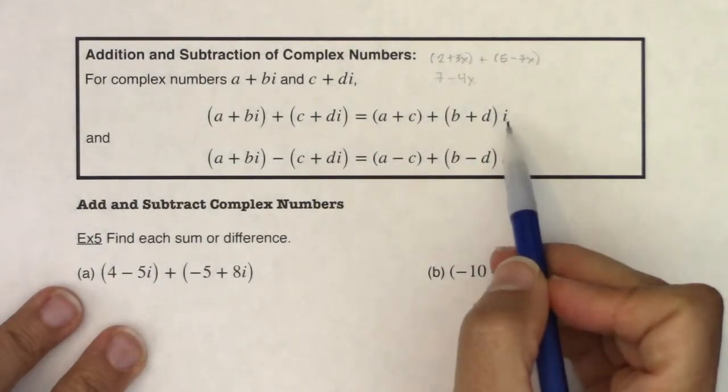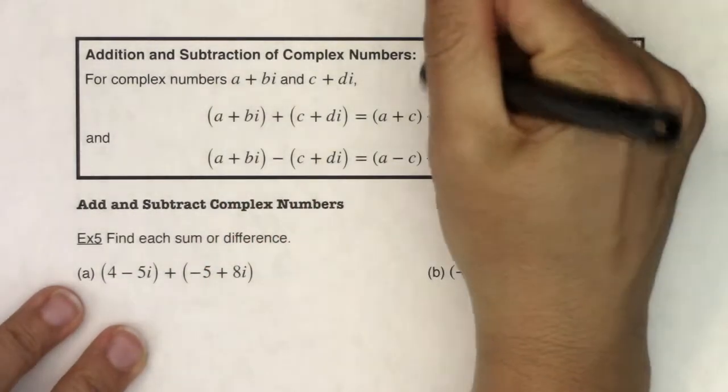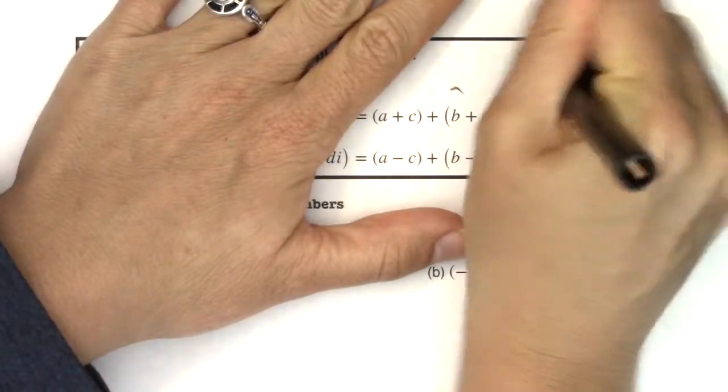And we've also seen this with radicals before. And I mentioned radicals because i is a radical. It is the square root of negative 1. So let me give you another for instance.